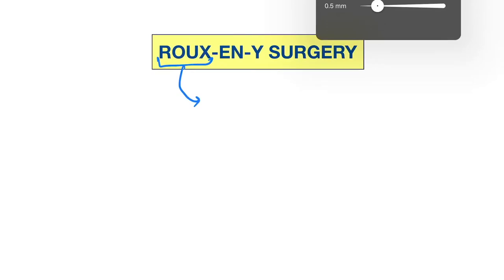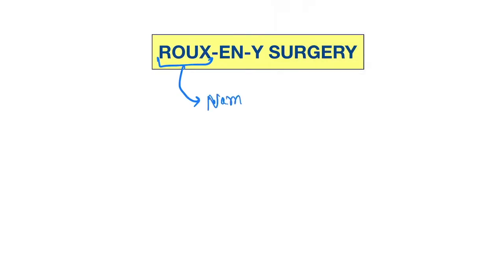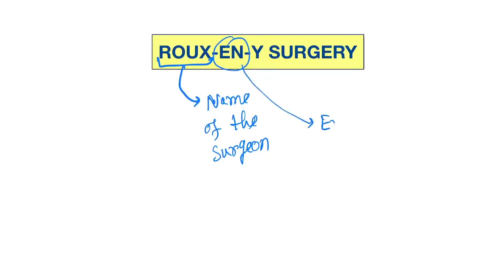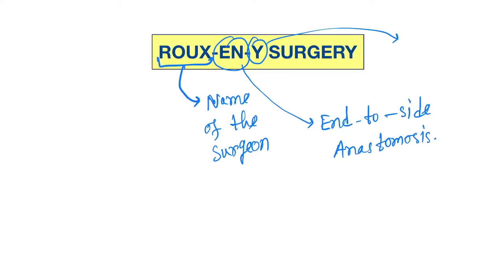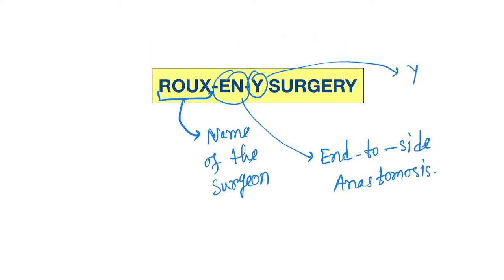Hello friends, today our topic is the Roux-en-Y surgery. The name implies: 'Roux' is the name of the surgeon who invented this surgery, 'en' is for end-to-side anastomosis, and 'Y' is because after the surgery procedure is done, it will look like a Y-shaped structure.